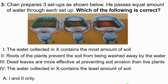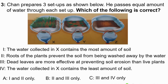Looking at the options A, B, C, and D, the correct answer is D. This says roots of the plants prevent the soil from being washed away by water, and the water collected in this contains the least amount of soil.